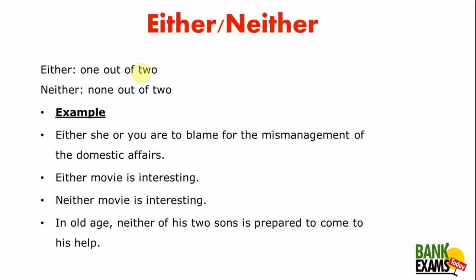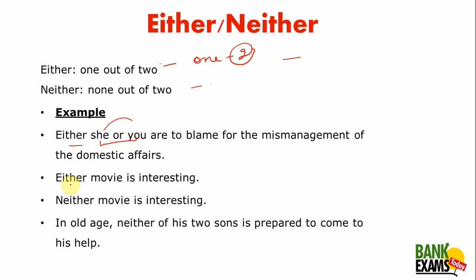The next is 'either' and 'neither'. 'Either' means one out of two — it represents choices. 'Neither' means none out of two — nothing from the two things or two persons is picked or selected. For example: 'Either she or you are to blame for the mismanagement of the domestic affairs.' Here, any one of these two persons is accountable, so we use 'either'.